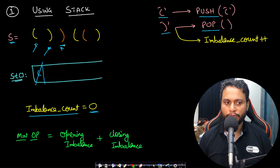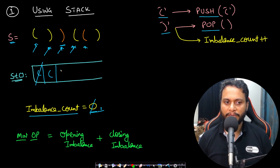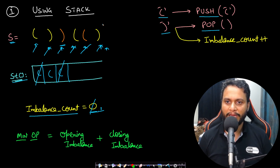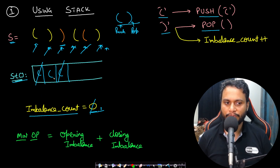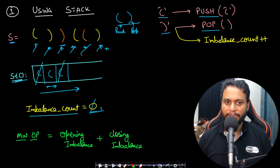The imbalance counter starts at zero. Whenever we see a closing bracket with no opening bracket to balance it, we increment it and skip to the next character. For opening brackets, we append to the stack. When the entire string is processed, the stack must be empty for a balanced string — push for opening, pop for closing.